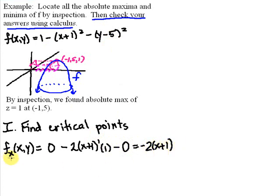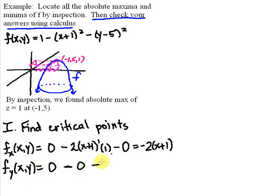Now let's find our partial with respect to y. A constant's derivative is zero. Since x is being held constant, that expression is zero as well. The derivative of (y−5)² is going to be 2(y−5) to the first power, and by the chain rule we multiply by the derivative of (y−5), which is 1. So this simplifies to negative 2 times (y−5).